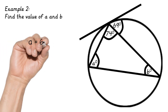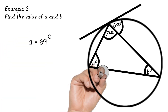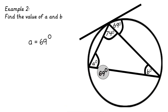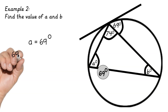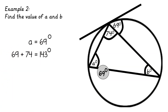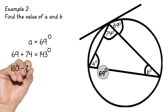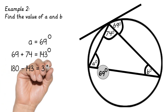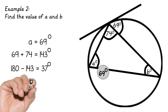To find B, it's just remembering that the angles in a triangle add up to 180. So we're going to add 69 and 74 together, and then take that away from 180. So 69 and 74 gives us 143, and 180 minus 143 gives us 37 degrees, which is B.